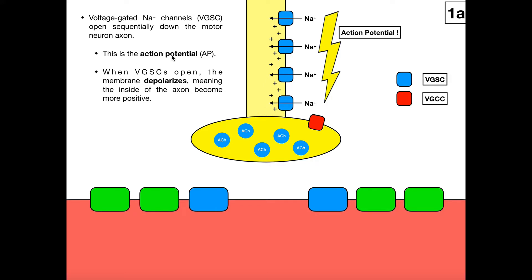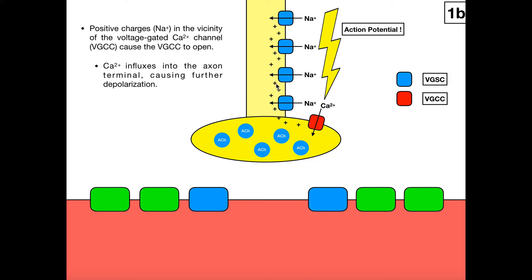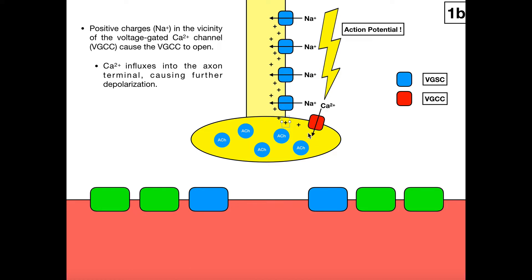At some point, the terminal voltage-gated sodium channels open and positive charges come into the cytoplasm in the vicinity of the synaptic end bulb, where instead we have voltage-gated calcium channels. These are localized in the membrane of the end bulb of the motor neuron axon. Those positive charges move over here, and the voltage-gated calcium channel senses that, triggering it to open and causing calcium to influx from the extracellular fluid into the cytoplasm of the motor neuron end bulb.